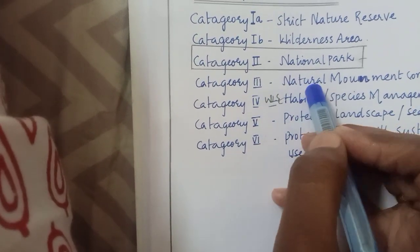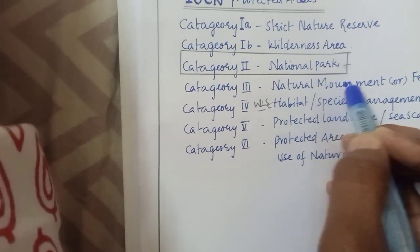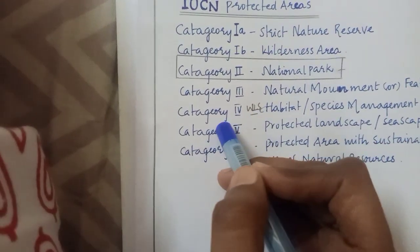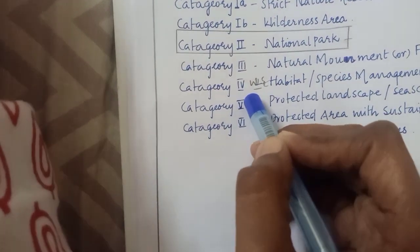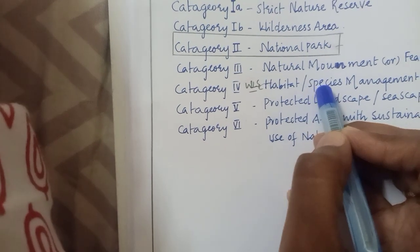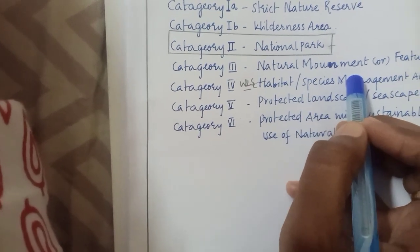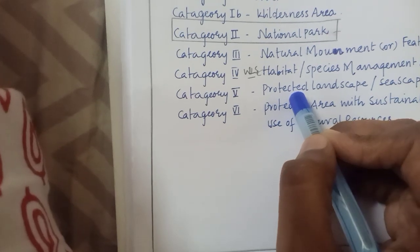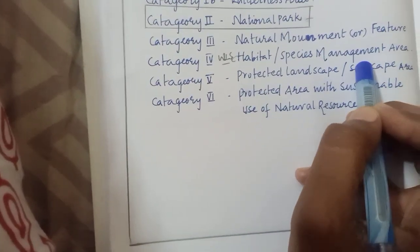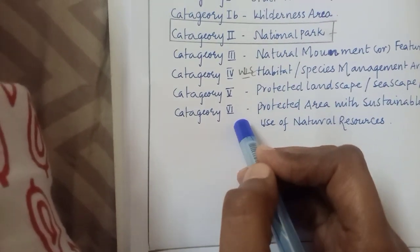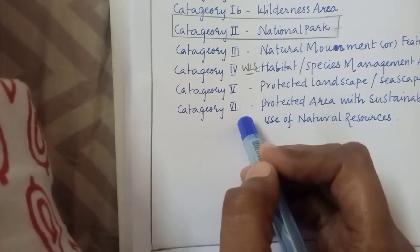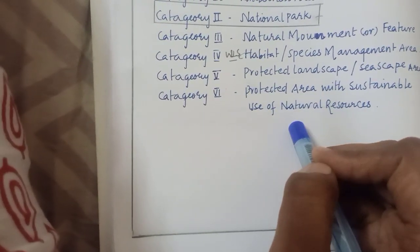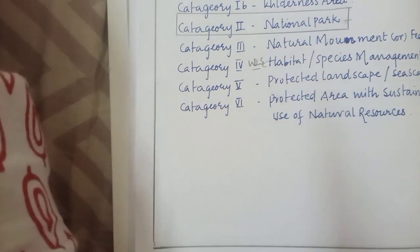Category 3 includes natural monuments or features. Category 4 includes habitat or species management area. Category 5 includes the protected landscape or seascape area. And the last one, category 6, covers protected areas with sustainable use of natural resources.